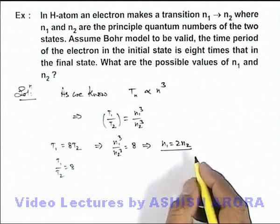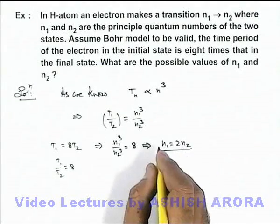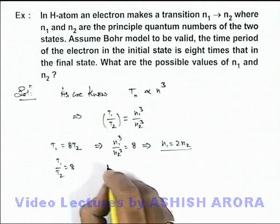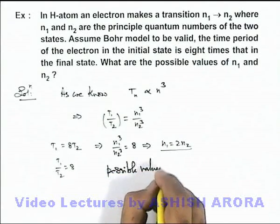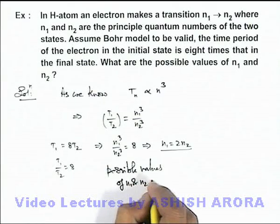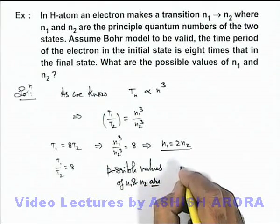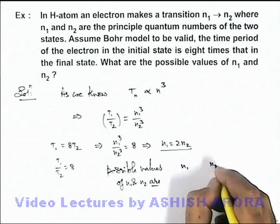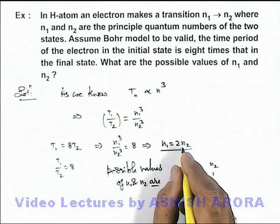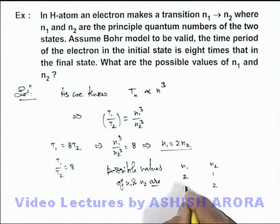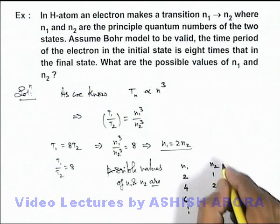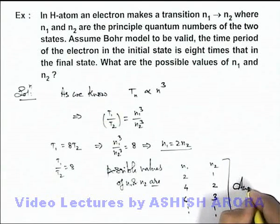So if we substitute different values for n2 and correspondingly n1 are obtained, then we can say possible values of n1 and n2 are: if n2 is equal to 1, n1 will be 2. For n2 equal to 2, n1 will be 4. For n2 equal to 3, n1 will be 6, and so on. Many values can be obtained and that will be the answer to the problem.